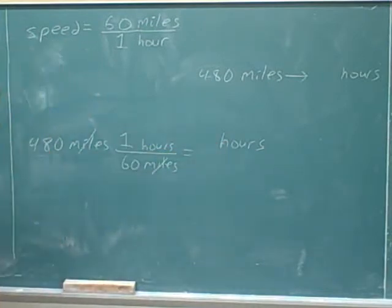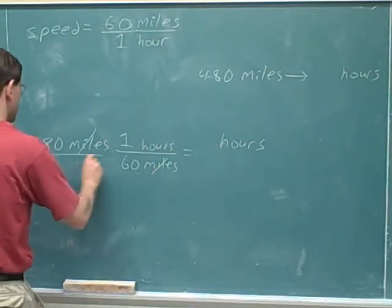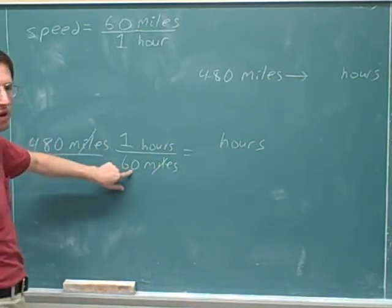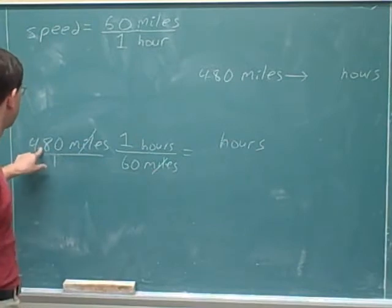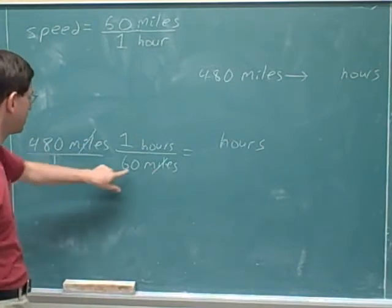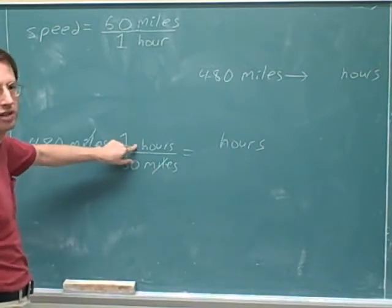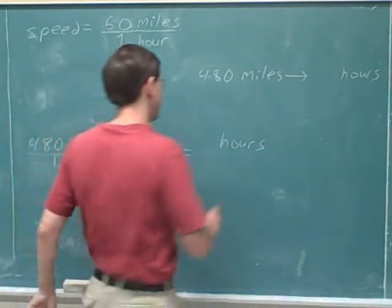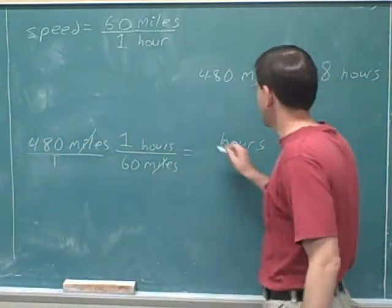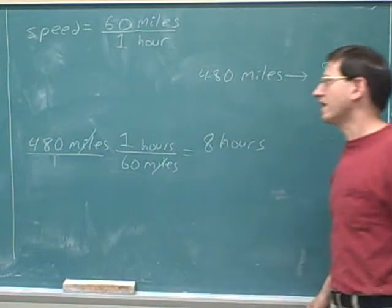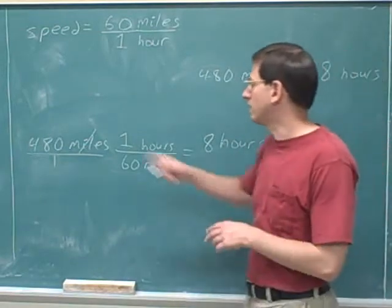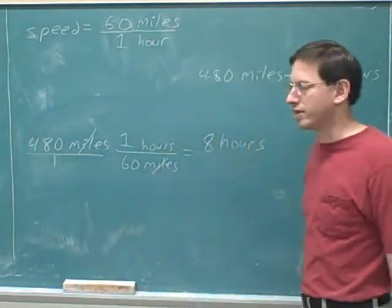Remember that we're multiplying by the numbers up here — you can see this is up here by putting it over 1 — but we're dividing by numbers down here. So this really means 480 divided by 60. We can ignore the number 1. 480 divided by 60 gives us 8 hours. That might have been obvious to you just based on common sense, but it's good to see how we can use the unit conversion approach as well.